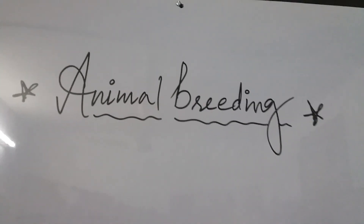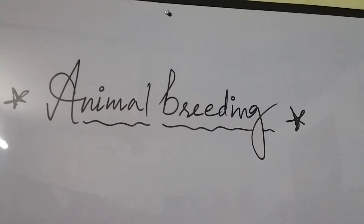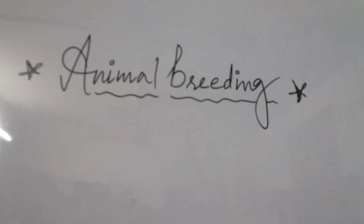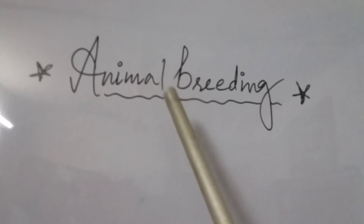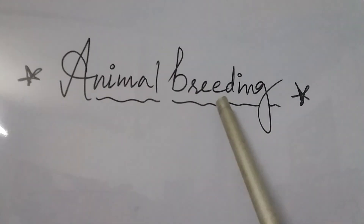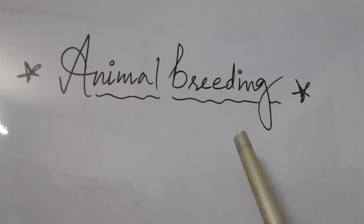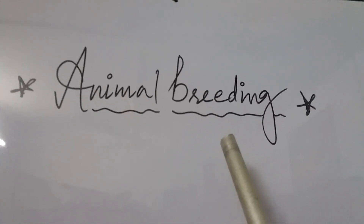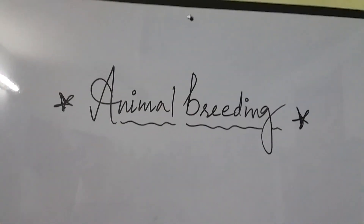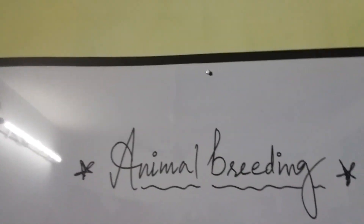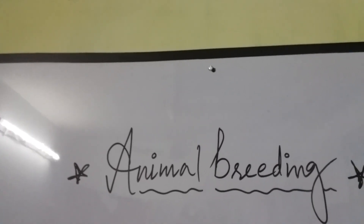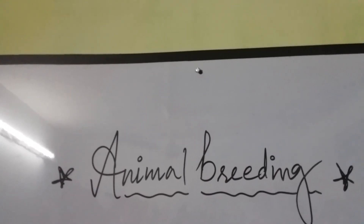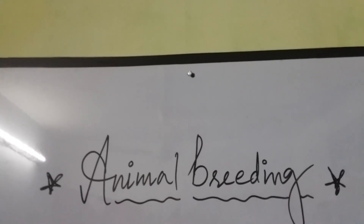Hello everyone. Today's topic is animal breeding. Animal breeding is one of the important aspects of animal husbandry. The objective of animal breeding is to improve the quality of desirable products and to increase the yielding power of the animal. The desirable characters like increased production of milk, quality of meat, or maximum yield of eggs per year are necessarily achieved by animal breeding.